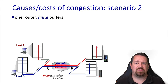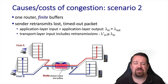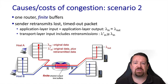In real systems the buffers are not infinite, so queuing delay is limited by the size of the buffer. This also means that the buffer will drop packets, which means they will have to be retransmitted, so our efficiency will decrease. Our application is sending at a rate of lambda in, but once we account for retransmissions we have a rate of lambda prime in, which is higher than lambda in, that needs to be sent over the network. Lambda out is the data delivered to the application, which will be the same as lambda in and less than lambda prime in.